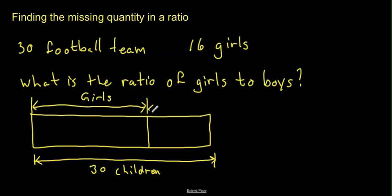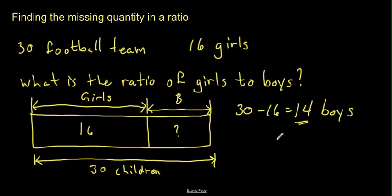So that means that this amount here is what we're looking for. We need to, first of all, find out how many are boys. Well, we do some simple math. We take 30 and we subtract what we know, which is 16, and that'll leave us with 14. So, that means that there are 14 boys on the team.